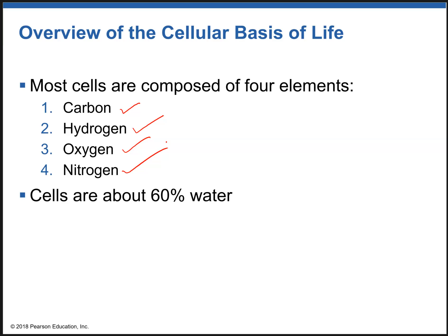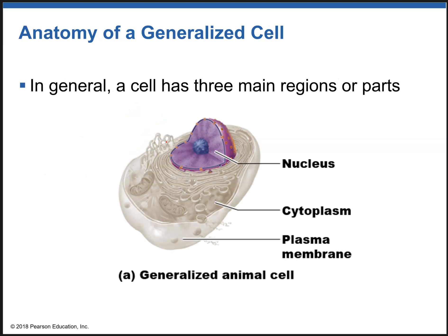Different cells have different characteristics based on the type of organism. Plant cells have a different structure, but animal cells have a different structure of their own because of the type of function. Since this is human anatomy and physiology, we will be looking at the general structure of animal cells. In general, they have three main parts or regions — the first major part is the nucleus.